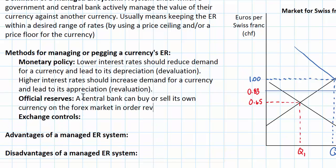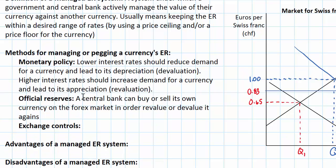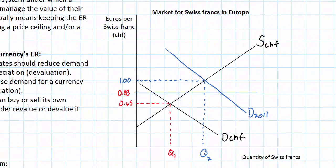The use of official reserves means a central bank can buy or sell its own currency on the forex market in order to revalue or devalue it against another currency. The Swiss National Bank did not buy Swiss francs — that would have further driven up demand and strengthened the currency. Instead, it promised to buy euros in nearly unlimited quantities in order to strengthen the euro and weaken the franc. The way it increased demand for euros was by printing hundreds of billions of francs and increasing the supply of Swiss francs in the forex market in Europe.